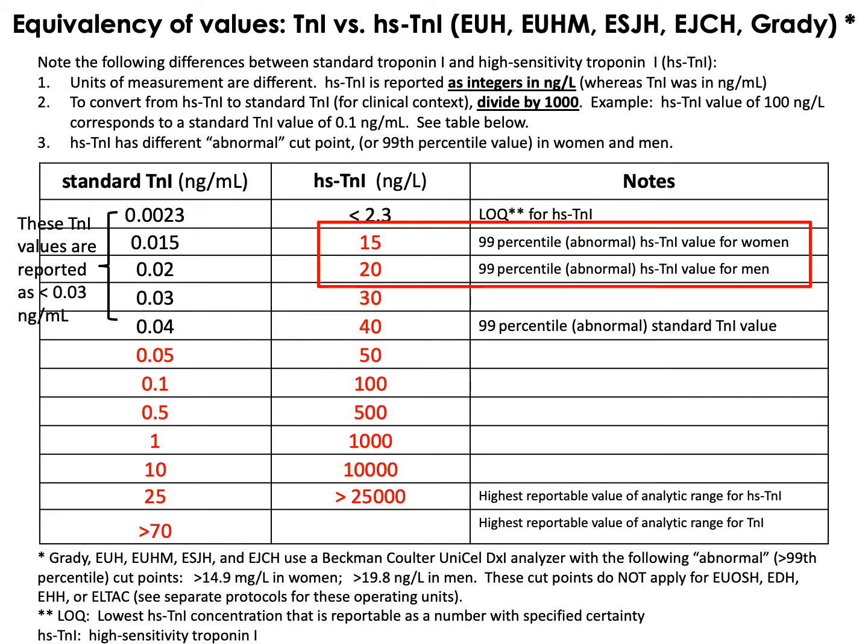The second key observation is that standard troponin had a common cut point for abnormal for both men and women, but for high-sensitivity troponin there are sex-specific cut points. For women, any value at or above 15 nanograms per liter will be flagged as abnormal. For men, any value at or above 20 nanograms per liter will be flagged as abnormal.